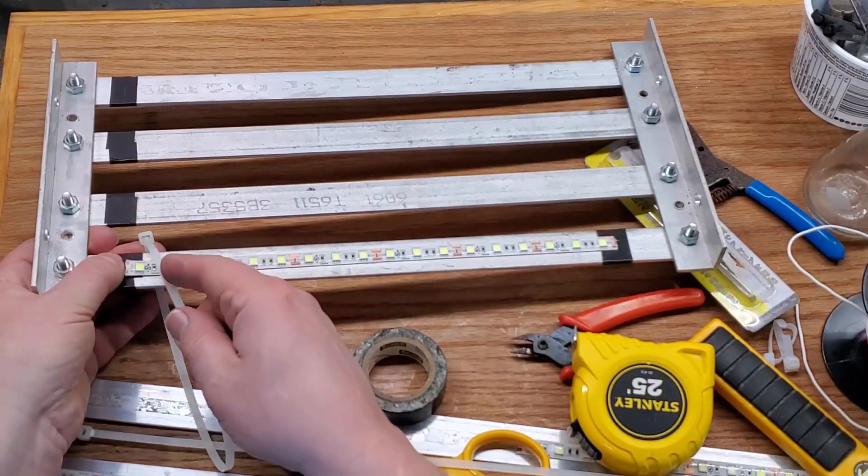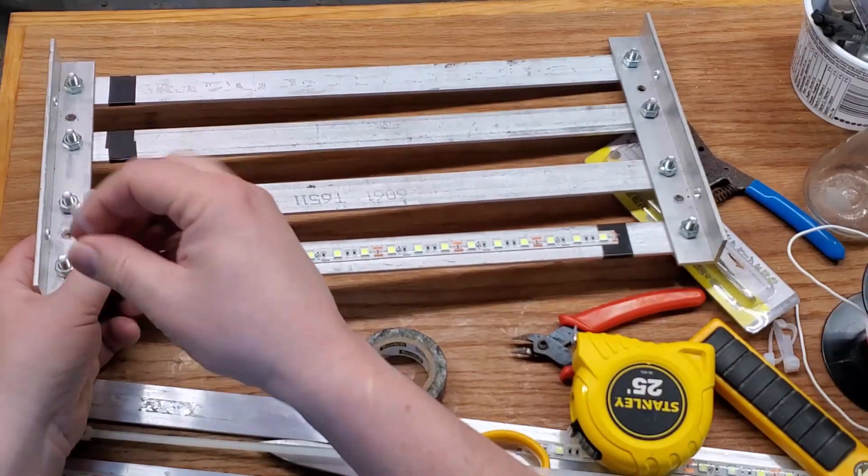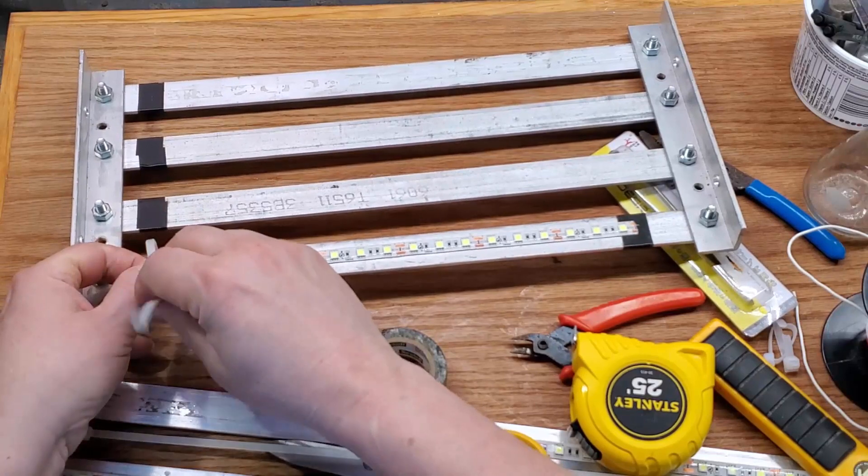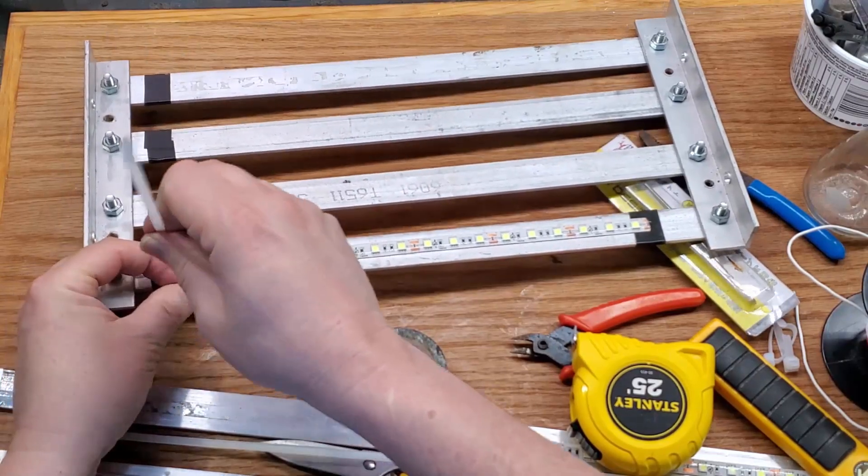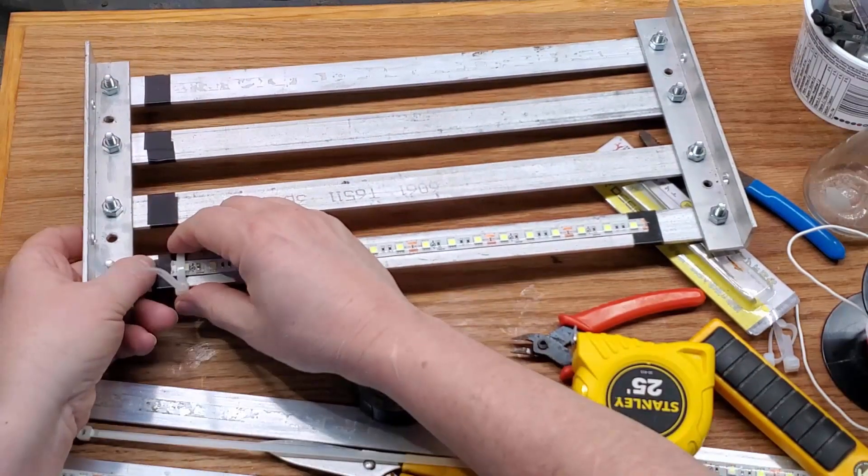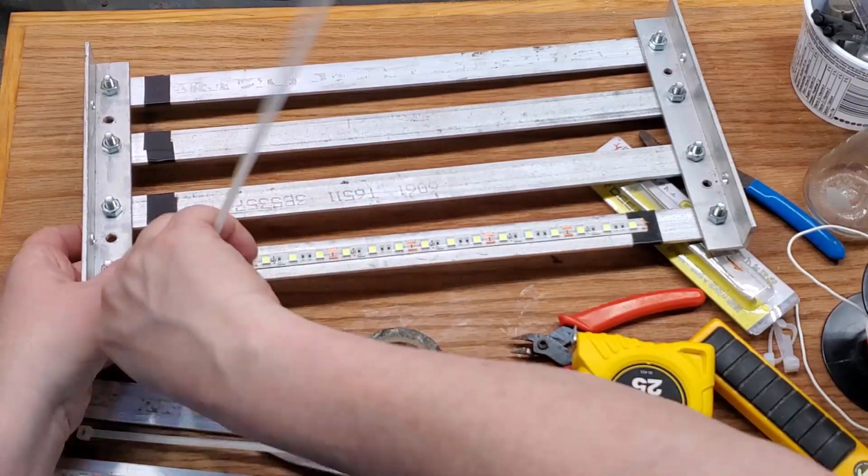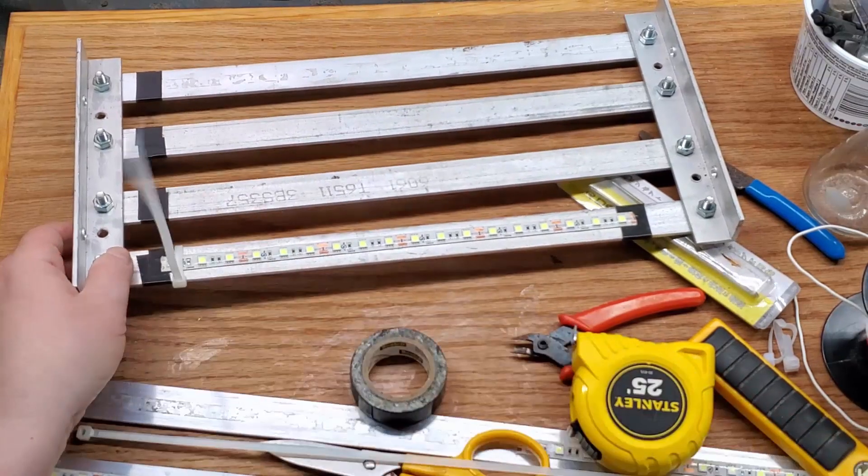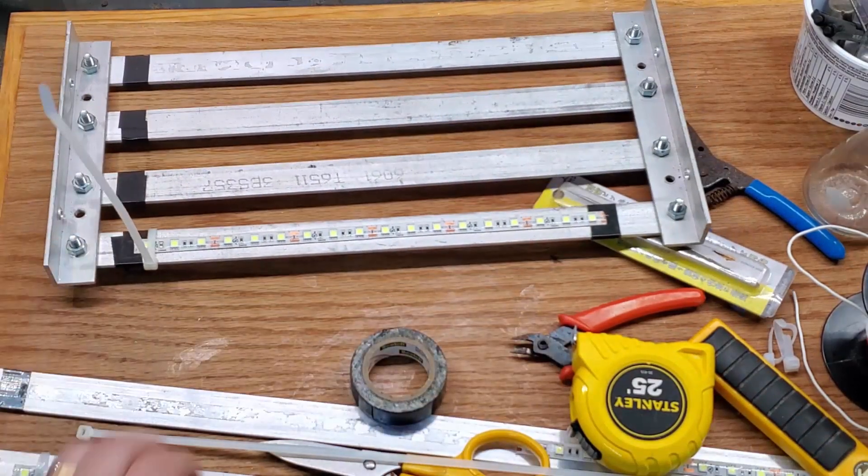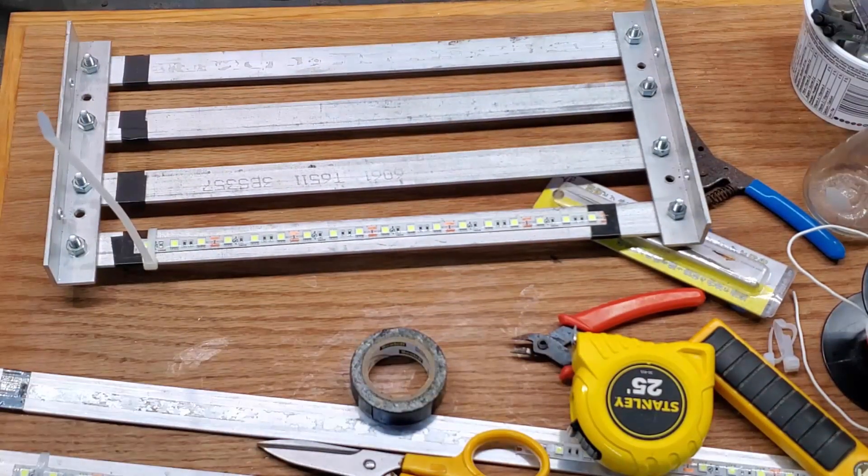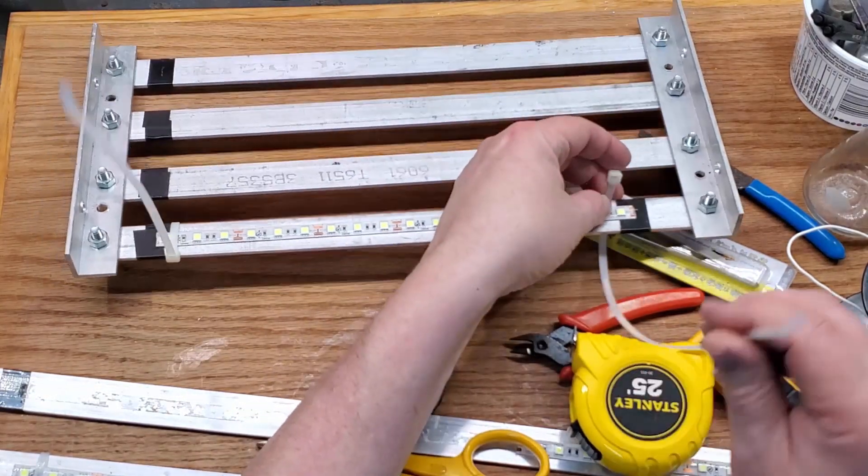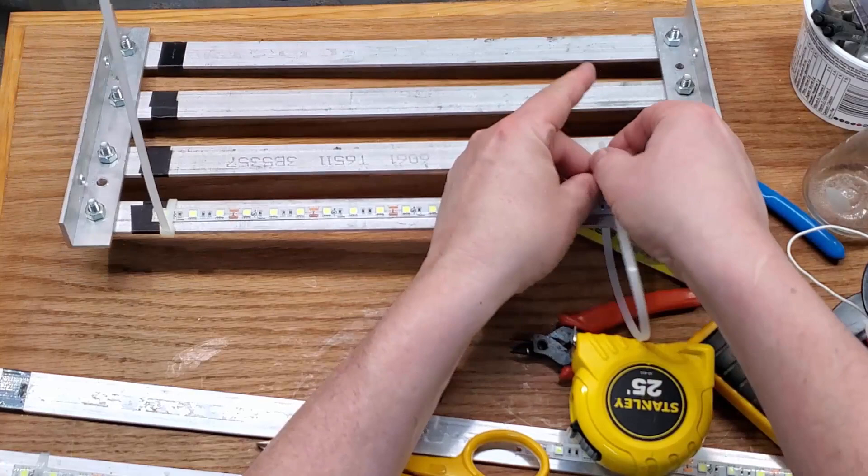I'm going to put these zip ties on here. I don't think they're really necessary, but there's no point in taking any chances. This just keeps it a little bit more secure anyway. I really do need to buy some shorter ones. These work obviously and are much more useful for a lot of projects, but having a few teeny ones around just for this sort of stuff would mean a lot less wastage of plastic.